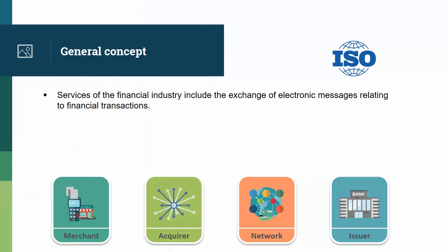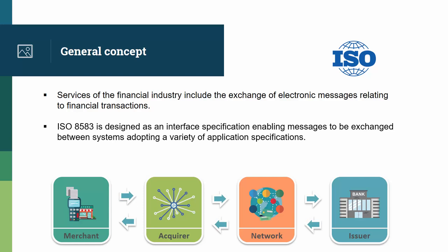Let's start with the general concept. Services of the financial industry include the exchange of electronic messages relating to financial transactions. ISO 8583 is designed as an interface specification, enabling messages to be exchanged between systems adopting a variety of application specifications. This is what you can see on the bottom diagram: the merchant terminal communicating with the acquirer host, the acquirer communicating with the payment network, and the payment network communicating with the issuer. And those are just a few examples.